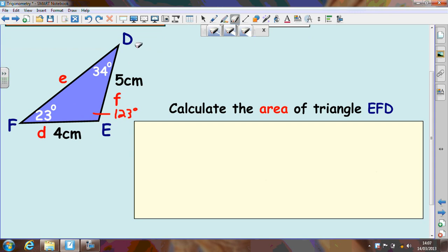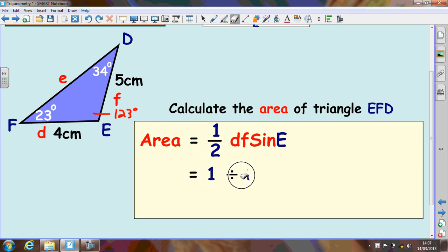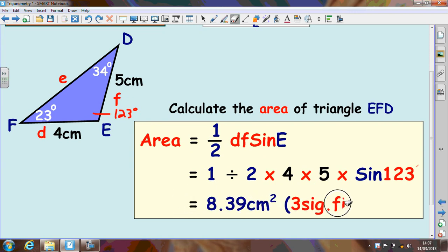So you want to get the formula with the correct letters. It would be E at the end, so sine E at the end. And then you put your other surrounding letters which would be D and F. And then you would just use the formula as before. 1 divided by 2, D is 4, F is 5, and then times sine 123. And the answer is 8.39 centimeters squared.